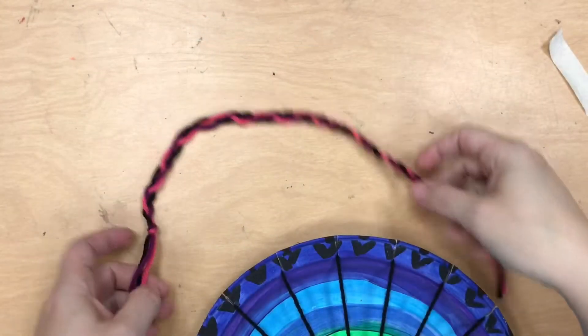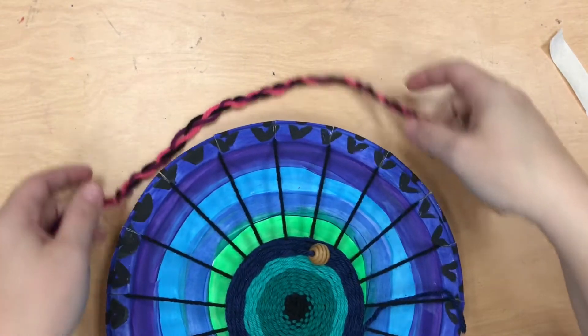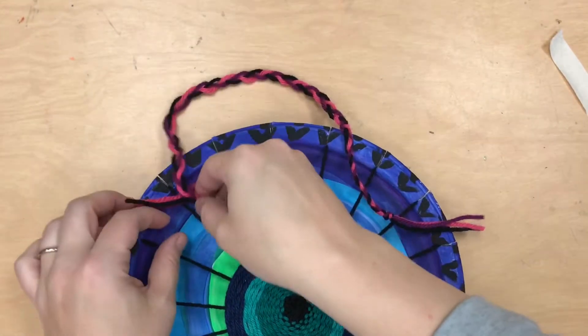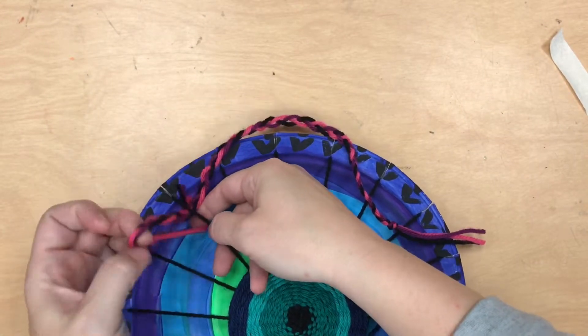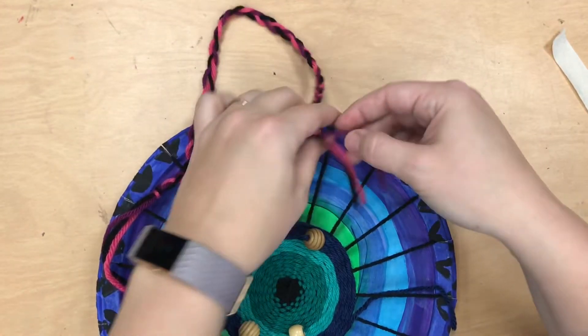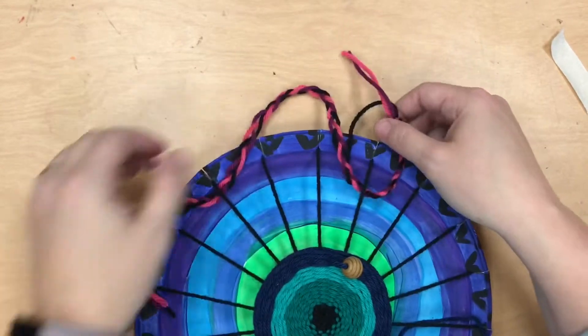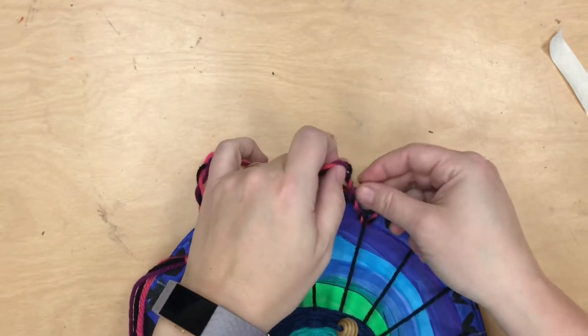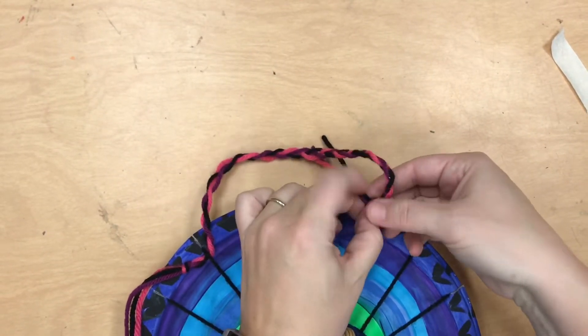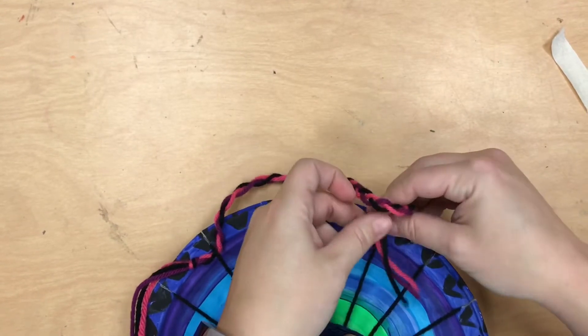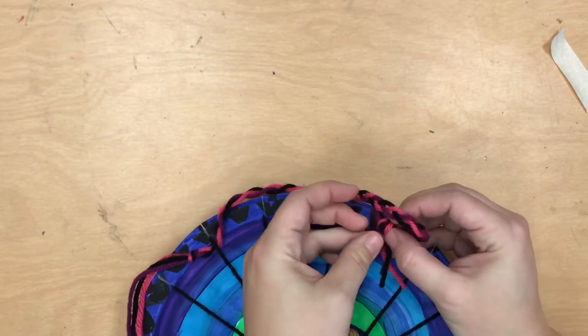Now I can attach this little hanger to my loom. I'm going to tie a knot around two different strings on my loom so that it can be hung on a tack or a nail or one of the clothes pins outside in our hallway.